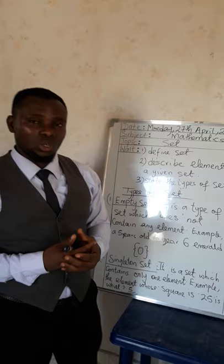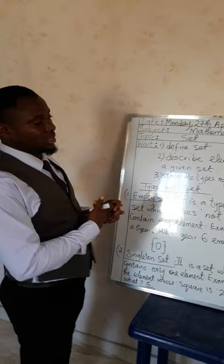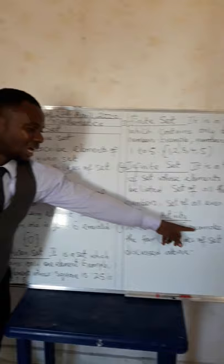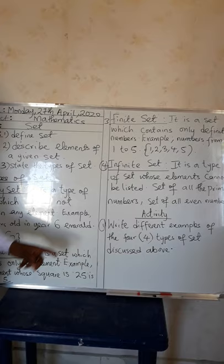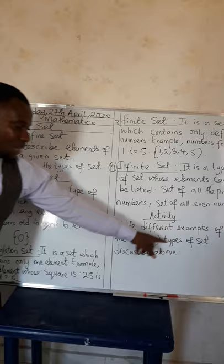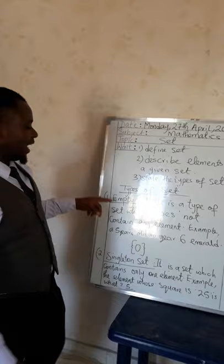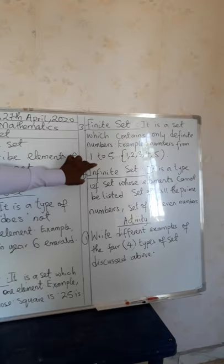Now let's look at the activity. You have to write different examples of the 4 types of sets discussed above. We have the empty set, the singleton set, the finite set, and the infinite set.